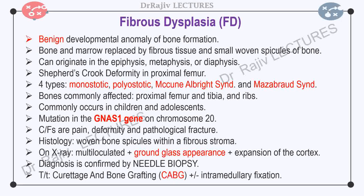There are four clinical patterns of fibrous dysplasia. One is monostotic, when only one bone is affected. Second is polyostotic, when multiple bones are affected. The third is McCune-Albright syndrome, where polyostotic fibrous dysplasia is associated with endocrine and skin changes. And the fourth and rarest is Mazabraud syndrome, with polyostotic fibrous dysplasia and associated intramuscular myxomas.